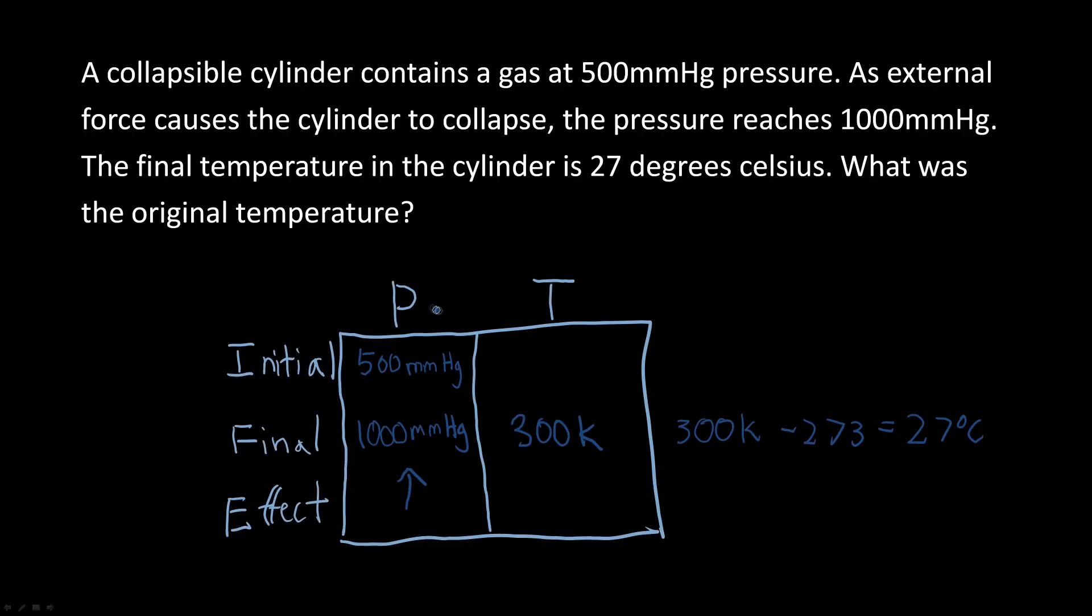From Gay-Lussac's Law, pressure and temperature are proportional. If pressure increases, temperature increases proportionally. We divide the final pressure by the initial pressure: 1000/500 = 2. This is the proportion to multiply the initial to get the final.